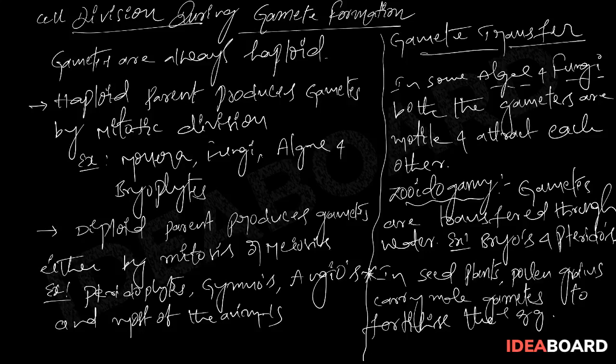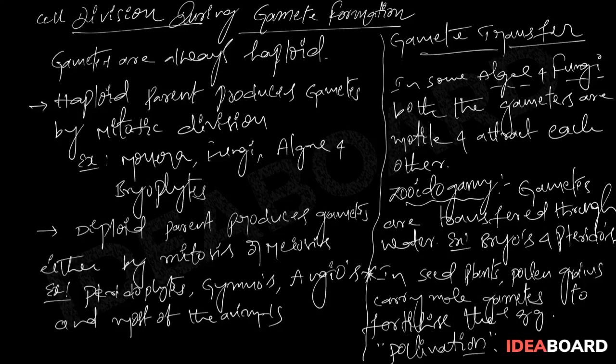Pollen grains are produced in anthers and transferred to the stigma by the process of pollination. Basically, pollination is of two types: self and cross pollination. Details about self and cross pollination will be discussed in the coming chapter.